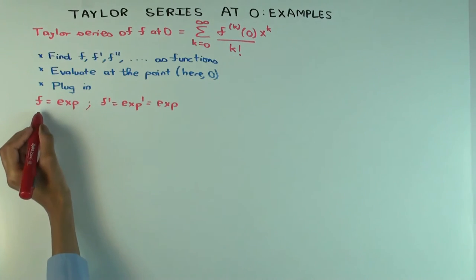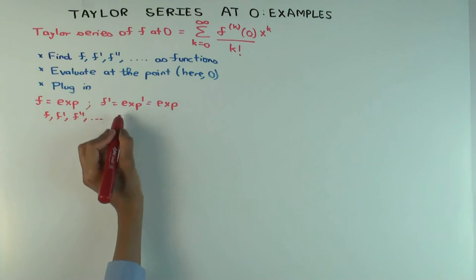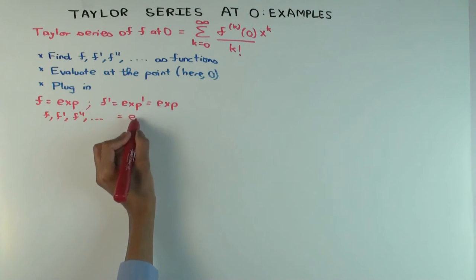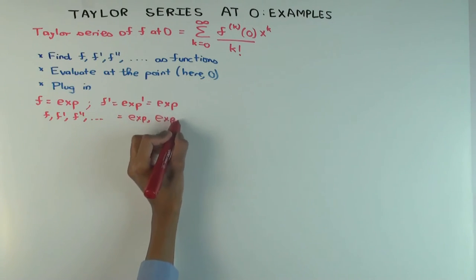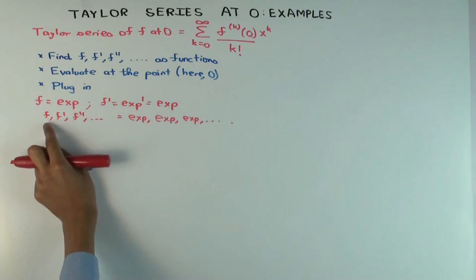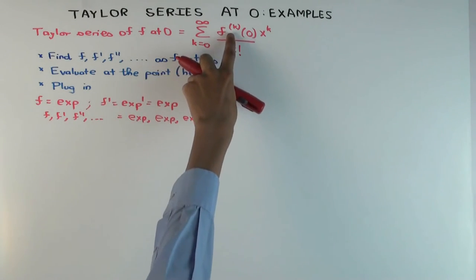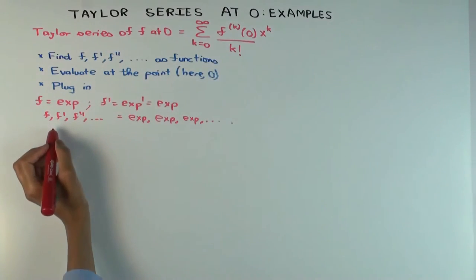So the sequence of derivatives - f, f prime, f double prime - is just the function. It's a constant sequence. Remember, you always start from the function. You don't start from the first derivative. You always start from the function because that's what it means to start from k equals zero. K equals zero would correspond to the function itself.